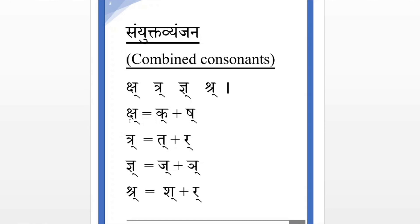CH is a combined sound of K and SH. TR is a combination of T and R. GY is a combination of J and N. SH is a combination of SH and R. This is GY — in Hindi we pronounce it as GY, not N. Once again: CH, TR, GY, SH. CH equals K plus SH; TR equals T plus R; GY equals J plus NY; SH equals SH plus R. CH, TR, GY, SH.